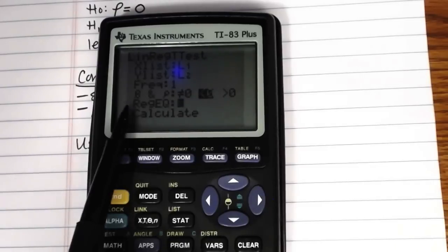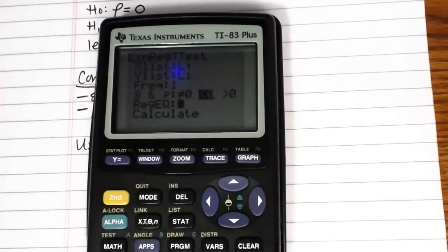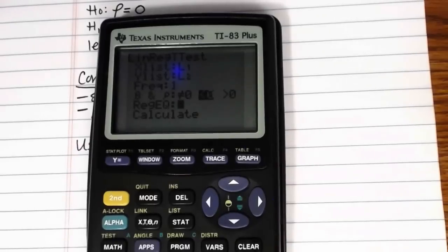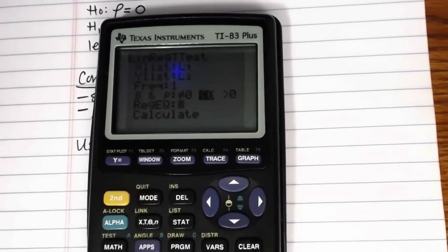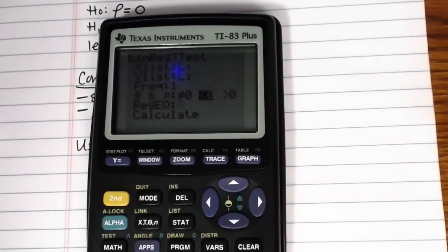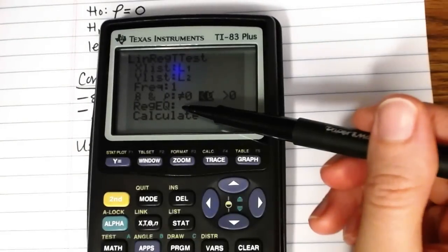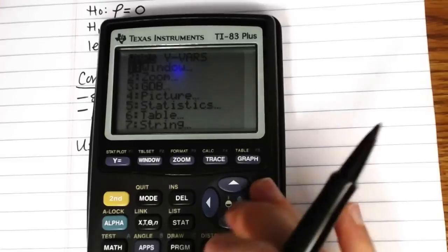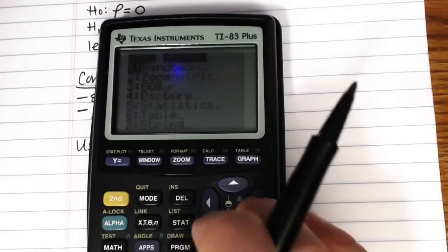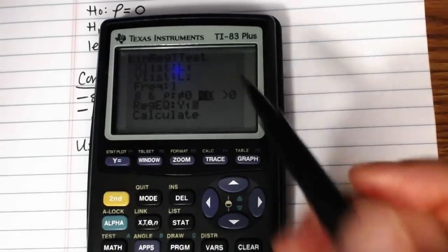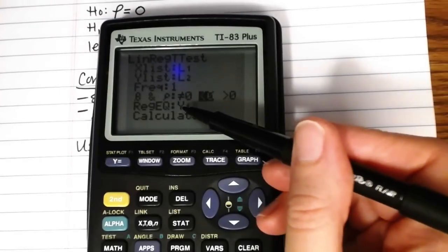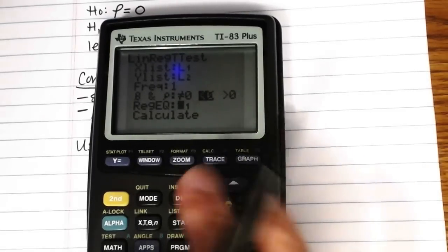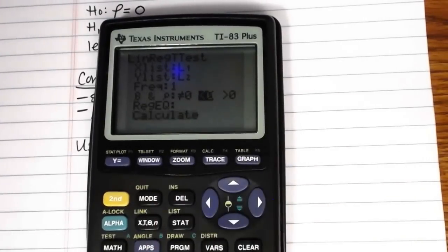Where it says reg eq, this is regression equation. If you actually want it to calculate, or it will calculate the linear regression equation as part of this hypothesis testing process. And if you want it to go ahead and have your regression equation stored in y1, you can do your vars, y vars function y1 here. Or you can just leave that line blank. Either one is perfectly fine. So you can leave it blank, or you can put y1 in there.